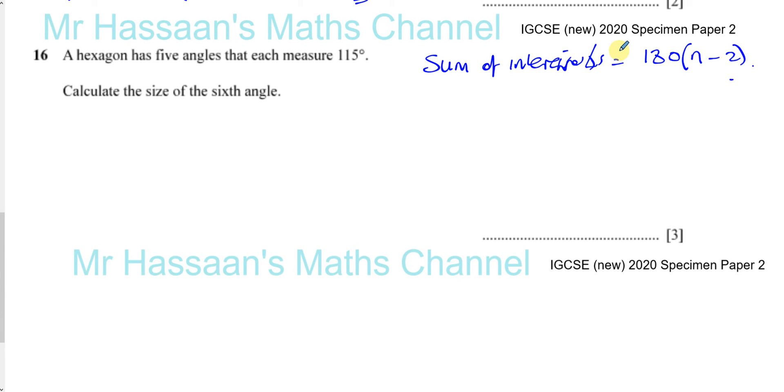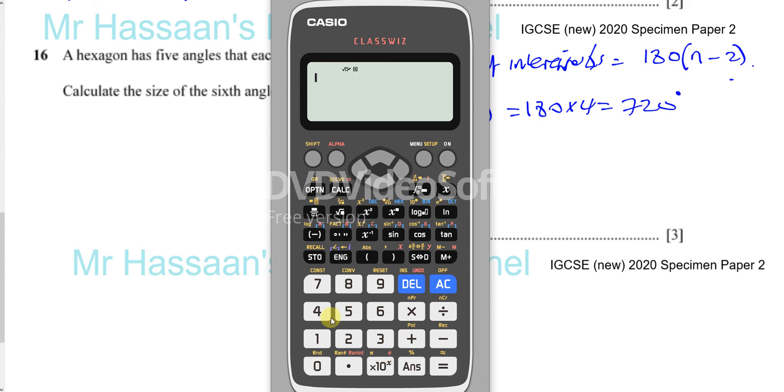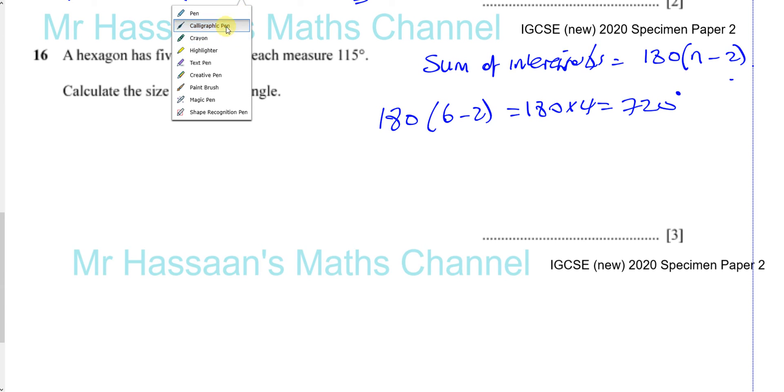So the sum of interior angles in a hexagon is going to be 180 times six minus two, which is 180 times four, which gives you 720 degrees. Let me just make sure I didn't make a mistake there. That's going to be 400 plus 320. So you've got 180 times four, which gives you 720 degrees. So 720 degrees is the sum of the angles in this polygon.